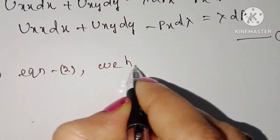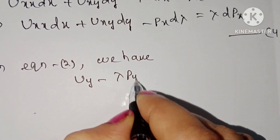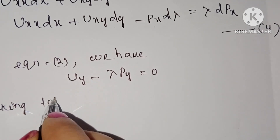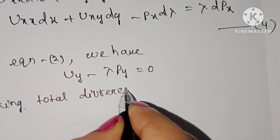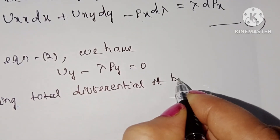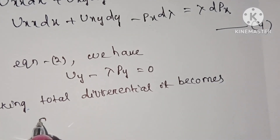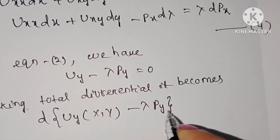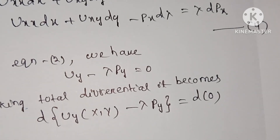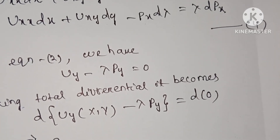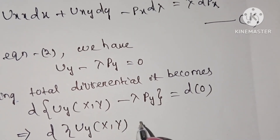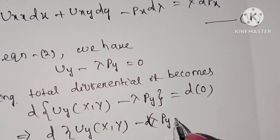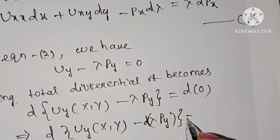From equation two, we have u_y minus λ·py equal to zero. Taking the total differential, it becomes d(u_y(x, y)) minus d(λ·py) equal to zero.